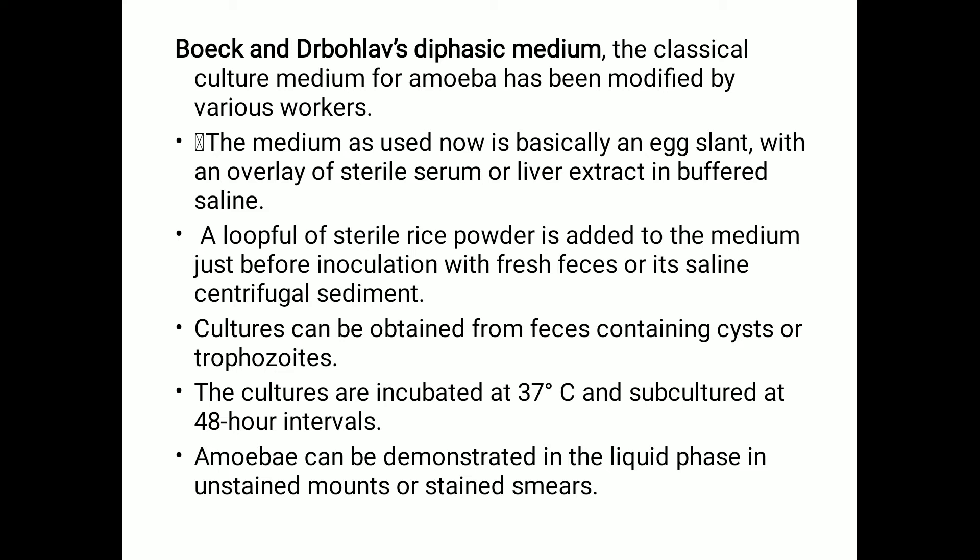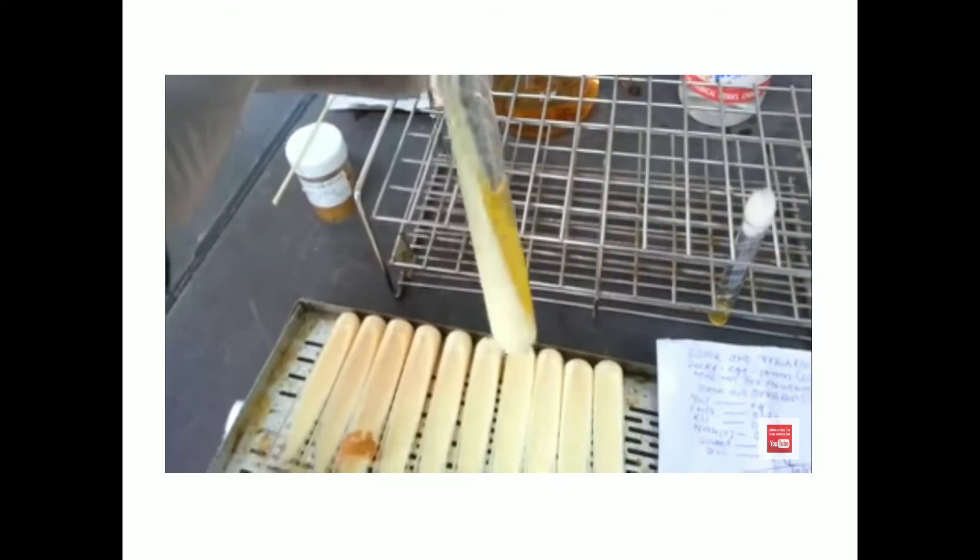The medium is basically an egg base with an overlay of sterile serum or liver extract in buffered saline. A loopful of sterile rice powder is added to the medium just before inoculation with fresh feces or its saline centrifugal sediment. Cultures can be obtained from feces containing cysts or trophozoites. Cultures are incubated at 37 degrees Celsius and subcultured at 48-hour intervals.